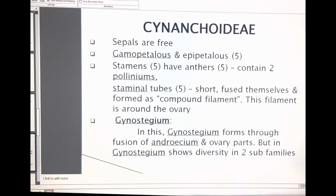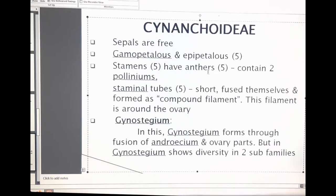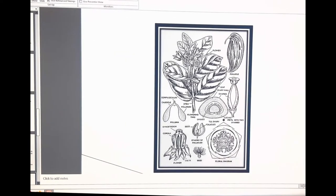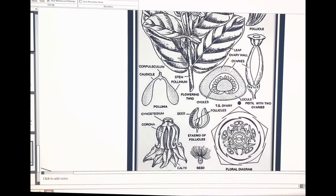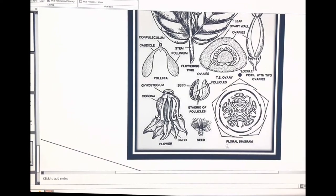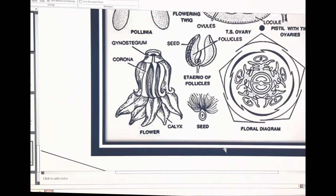The second sub-panel is Sinonkaidee. In the Sinonkaidee, sepals are 5 in number. Petals are also 5 in number. See this diagram — only the floral diagram is observed here. This belongs to the Sinonkaidee sub-panel in the Asclepiadaceae family. Examples are Calotropis procera and Calotropis gigantea.